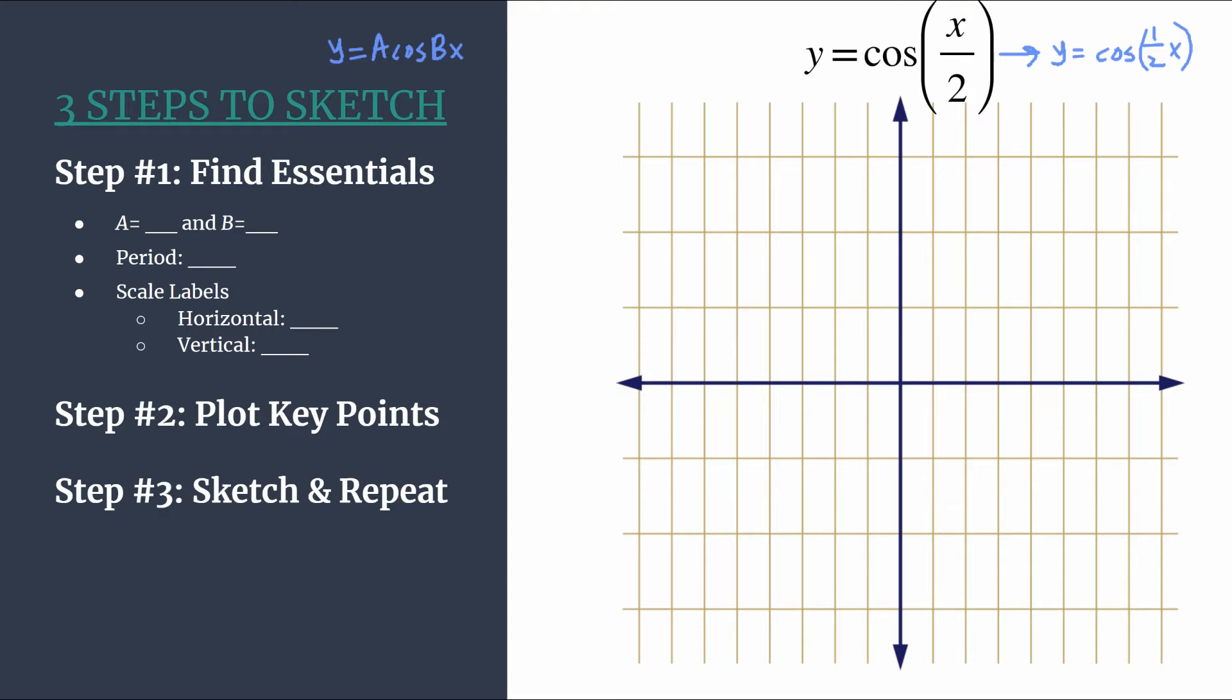Alright so let's jump into step 1. Identify a and b first so we see a is an understood 1 out front, so our amplitude is 1. That's our distance from midline to either maximum or minimum. And then b is going to be 1 half.